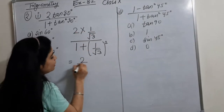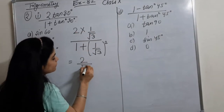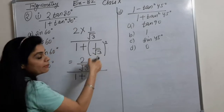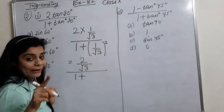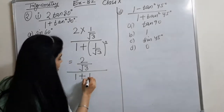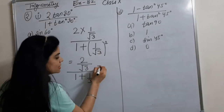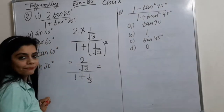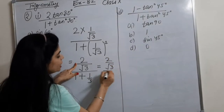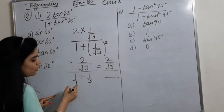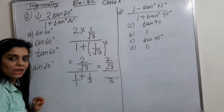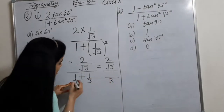Now we have 2 upon root 3 in the numerator. What is the denominator? 1 plus (1 upon root 3) squared, which is 1 upon 3. So the denominator becomes 1 plus 1/3. The LCM of 1 and 3 is 3, giving us 3 over 3.